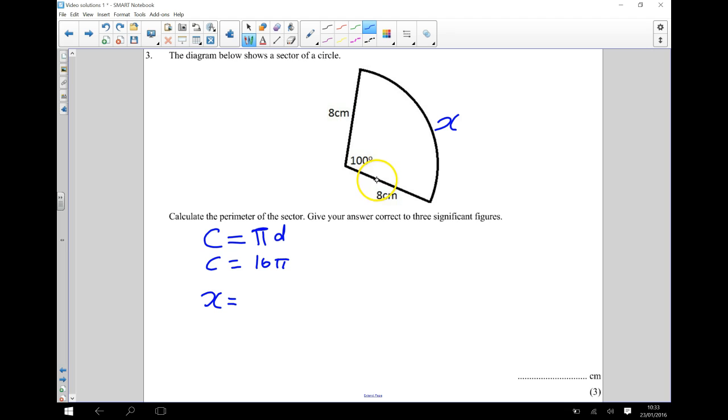So let's have a think. I've got 100 degrees out of a full circle, which would be 360 degrees. So I've got 100 out of 360, so 100 360ths of a circle, that's how much I've got here.